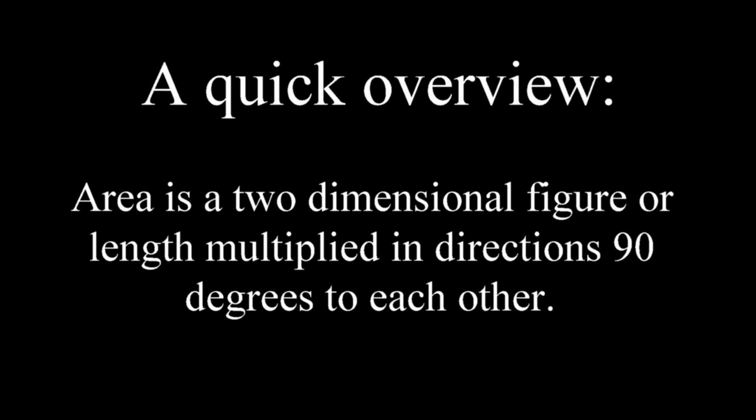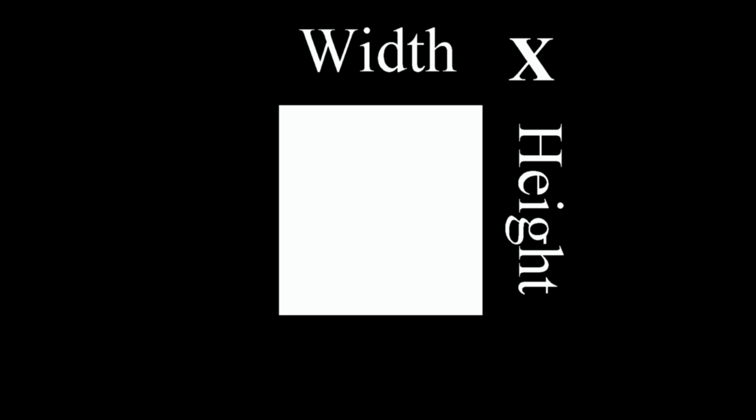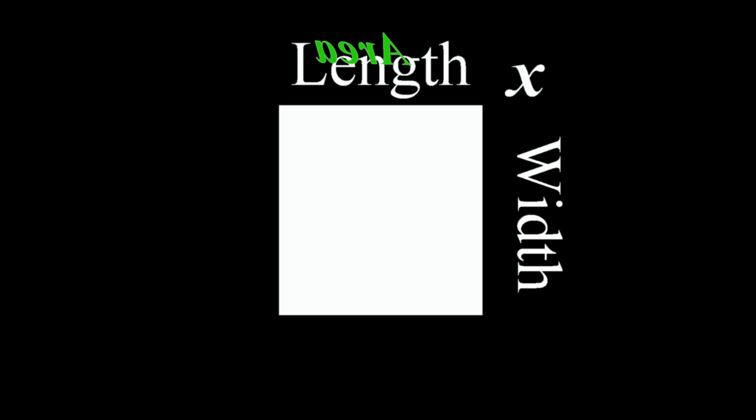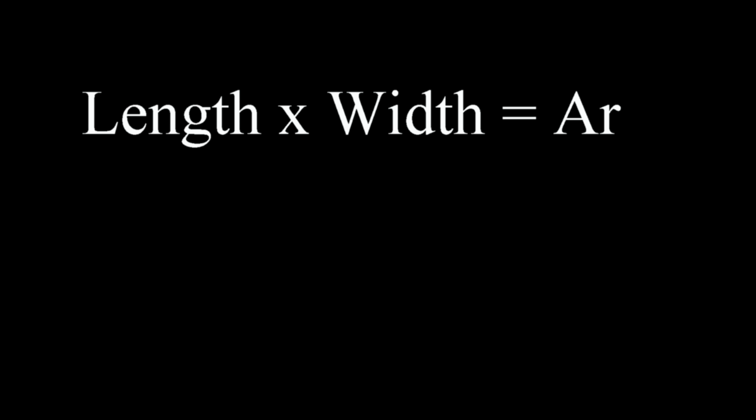A quick overview: area is a two-dimensional figure, or length multiplied in directions 90 degrees to each other. Width times height is area. Length times width is area.